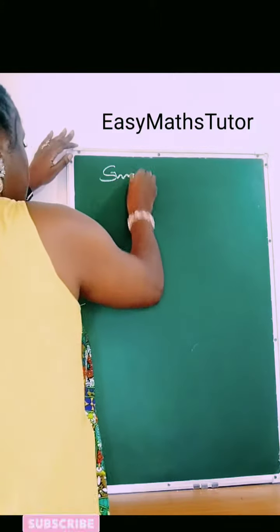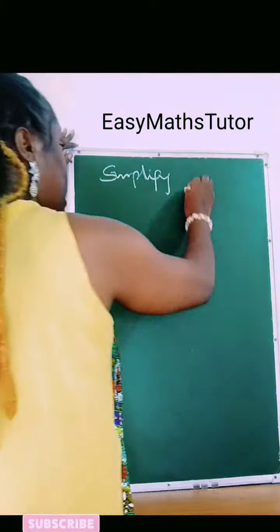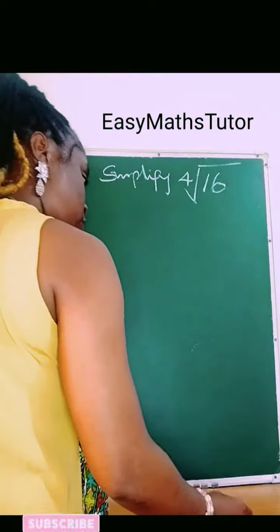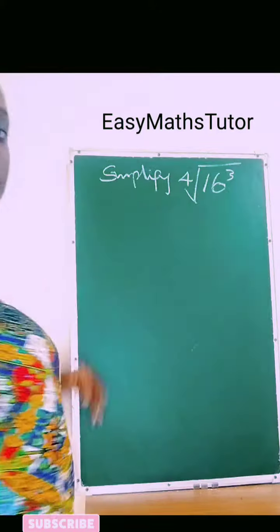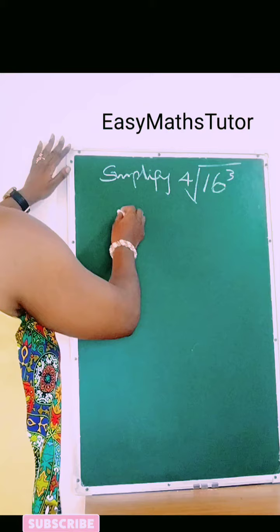So we are to simplify the fourth root of 16 raised to power 3, right? So we're supposed to simplify this. So how do we do this?